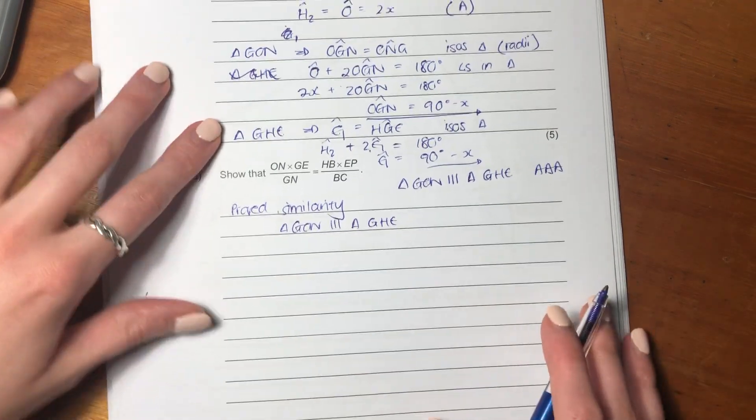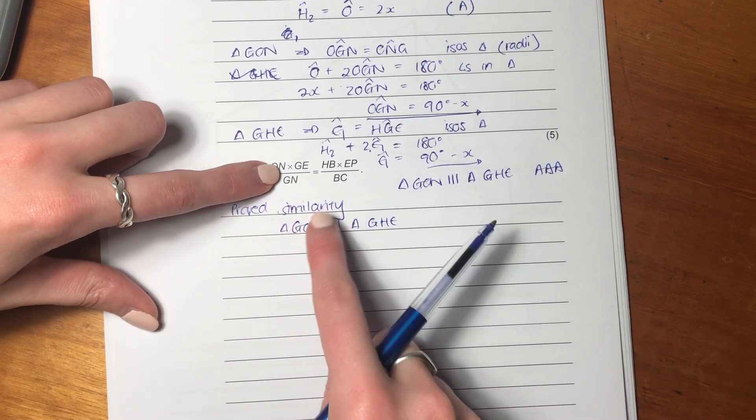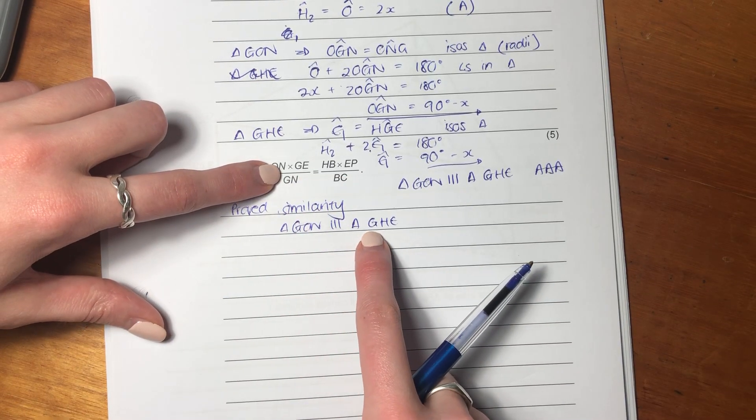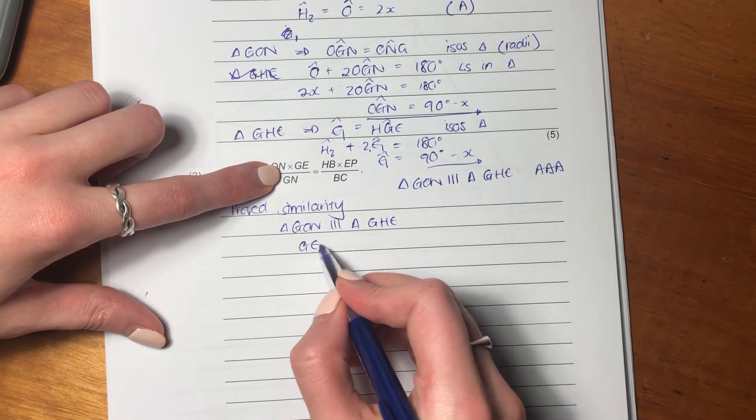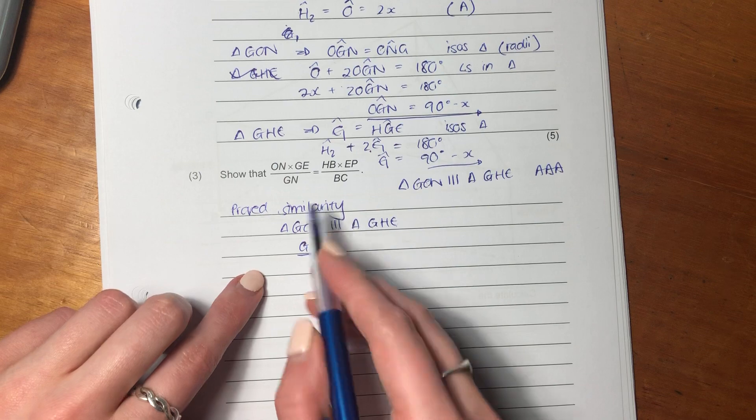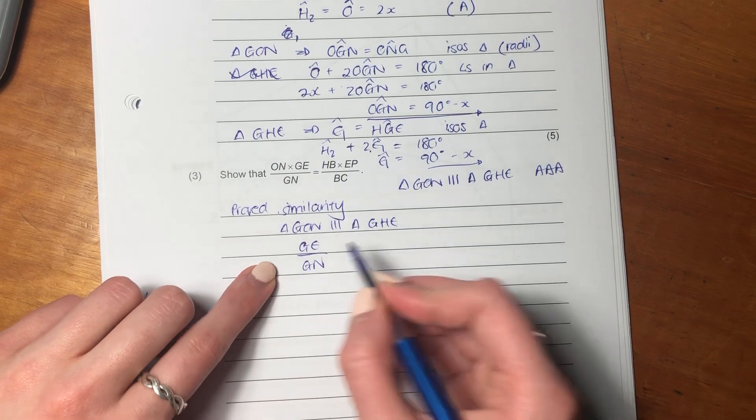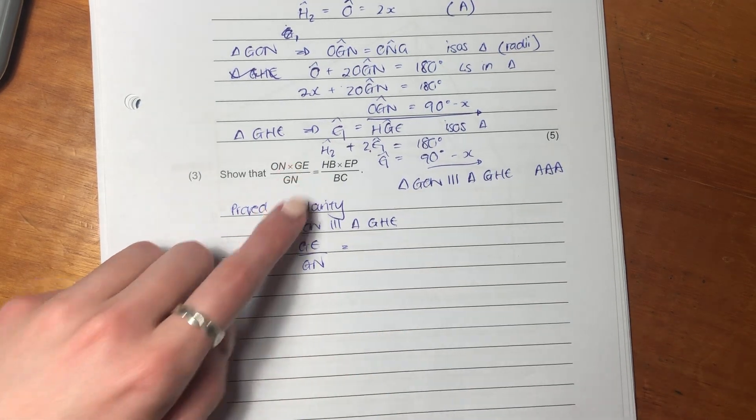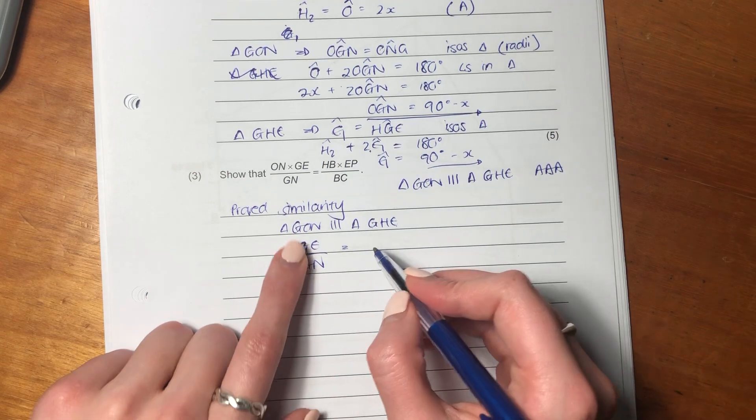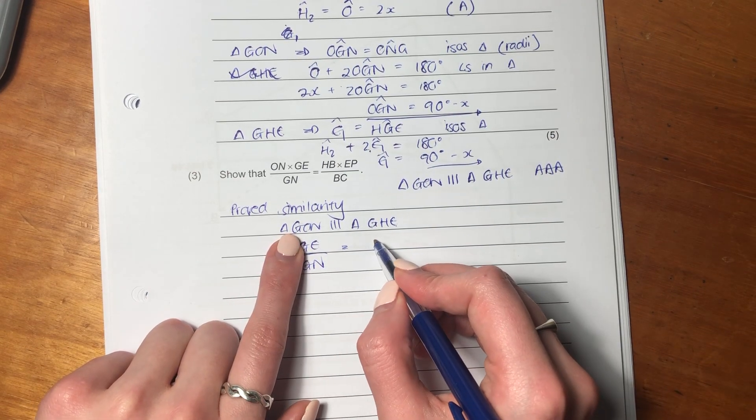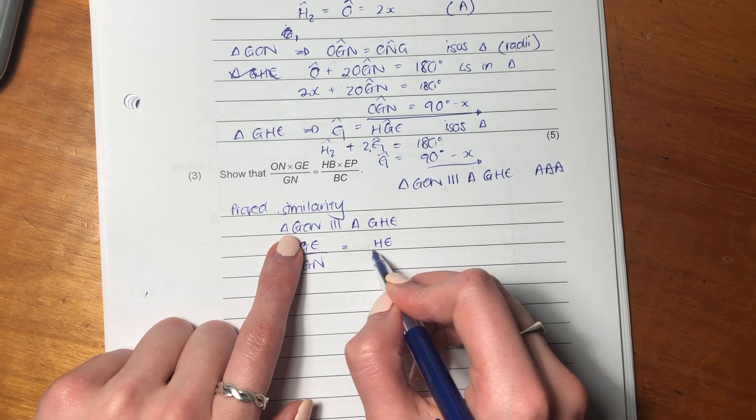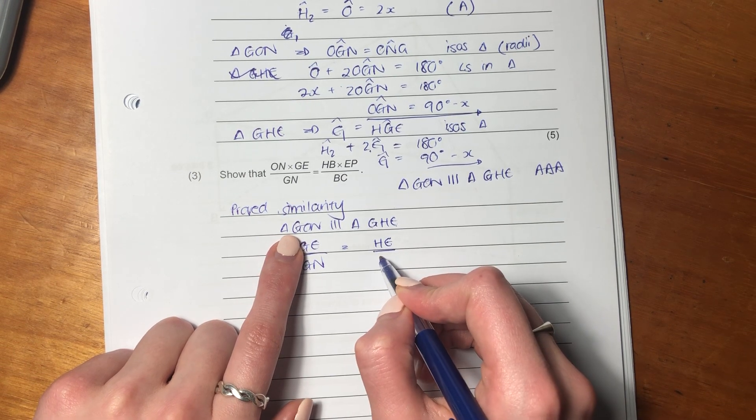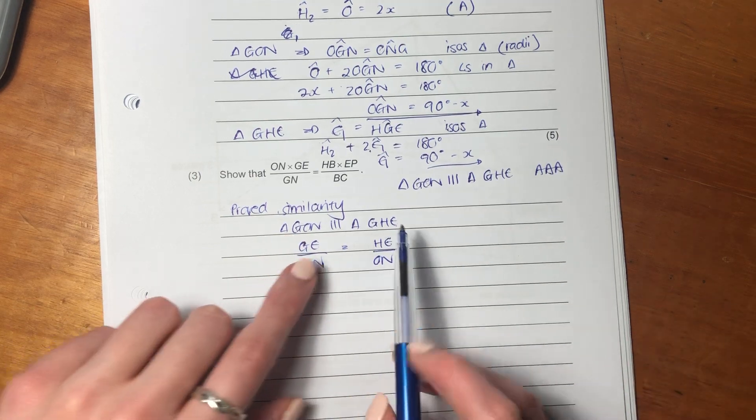So let's maybe do something with G-E. If we say G-E, I'm just getting G-E at the top. So G-E over G-N. Based on similarity, G-E over G-N equals H-E over O-N. So I'm just doing some different things here because I'm trying to get an O-N in there.